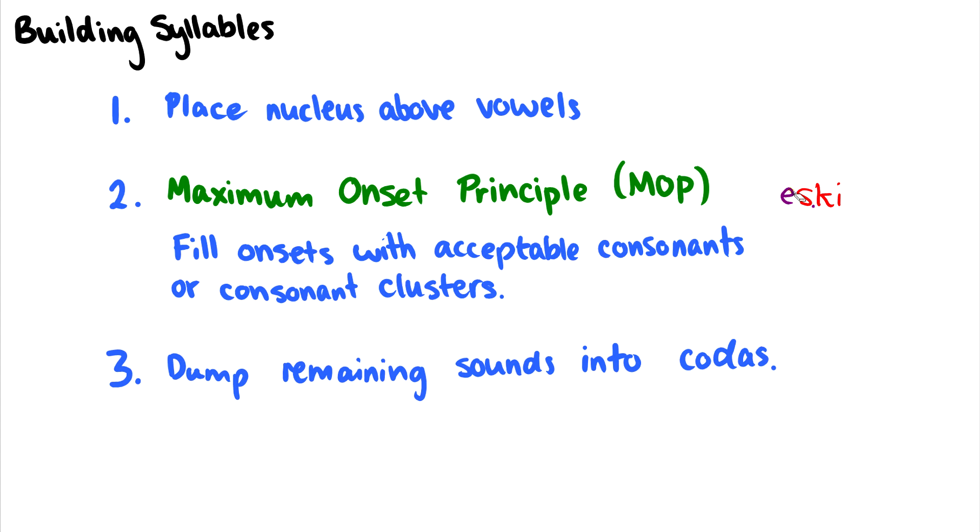And for English, the maximum onset principle says, if E is a nucleus here, this goes up to a syllable, then we should prioritize this sk in the onset of this syllable before considering it for codas. While in Spanish, it would say, I filled up with as much as possible because syllable structures don't allow this S to go in the same onset as the K there. So then we shove it in the coda of some other syllable. And this is what the maximum onset principle says.